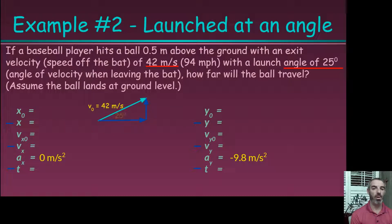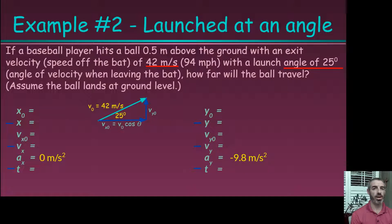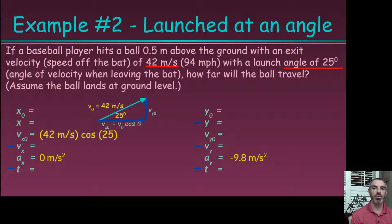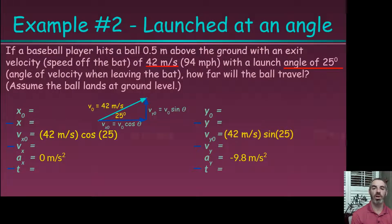The horizontal component is how much of that 42 meters per second is in the x direction, and the vertical component is how much is in the y direction — meaning we've created a right triangle. Using right triangle trig: vx0 equals v0 cosine theta, because cosine is adjacent over hypotenuse. For the vertical, vy0 equals v0 sine theta, since sine is opposite over hypotenuse. We solve for those velocities and get the corresponding values.